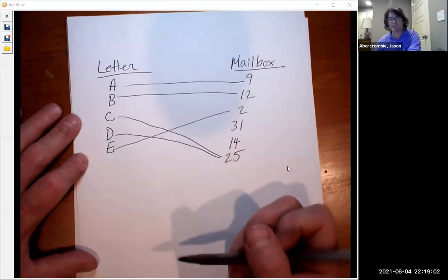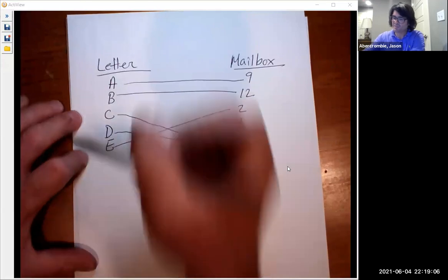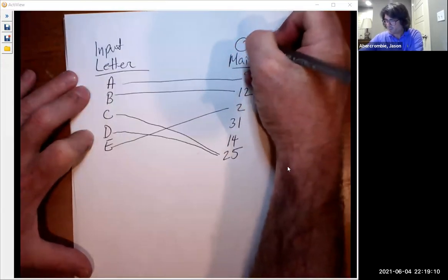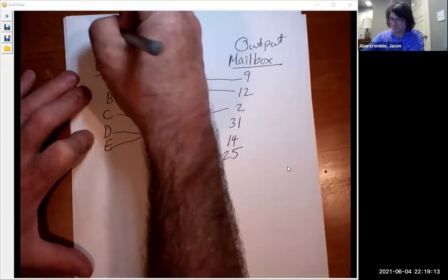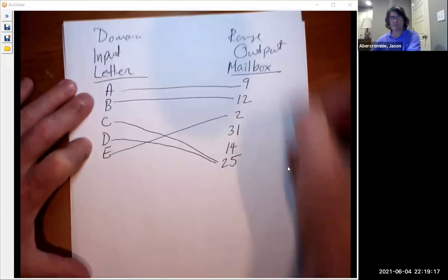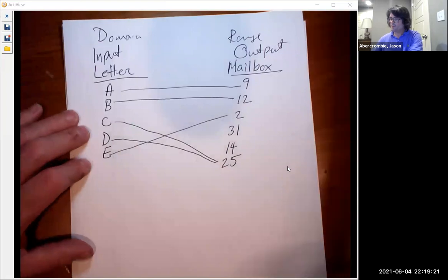So let's analyze this. First of all, every input, this is the input by the way, and this is the output, or you can call it the domain in the range, whatever you want to call it, it means the same thing.